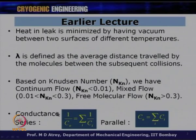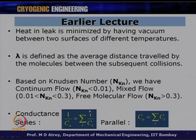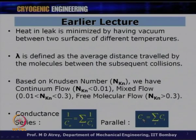We also studied conductance, which depends on pipe length, diameter, gas type, temperature, and pressure. For pipes in series, the overall conductance C0 is given by 1/C0 = 1/C1 + 1/C2 + 1/C3. For pipes in parallel, conductances are directly added: C0 = ΣCi. These relationships will be used to calculate system pumping speed.